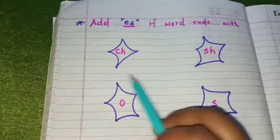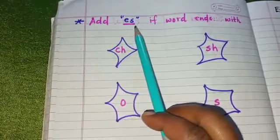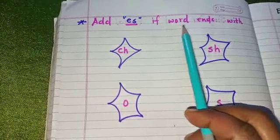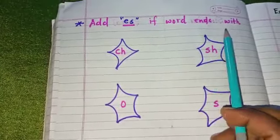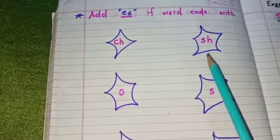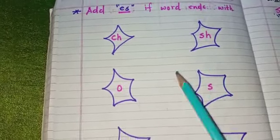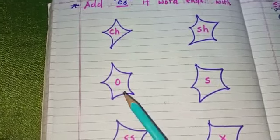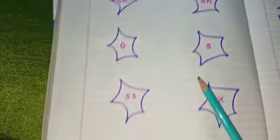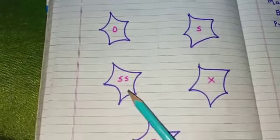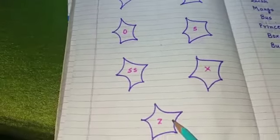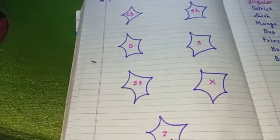Next is: add 'es' if the word ends with 'ch', 'sh', 'o', 's', 'x', or 'z'.